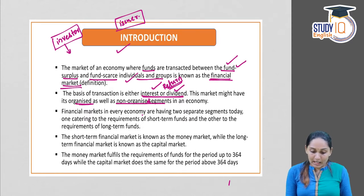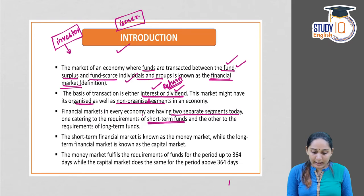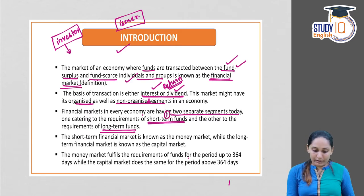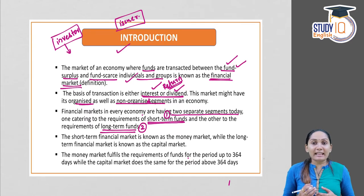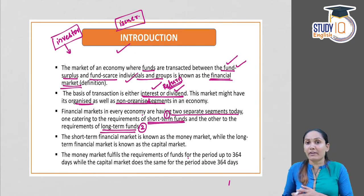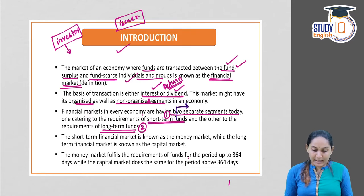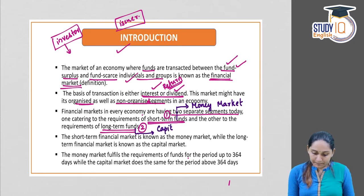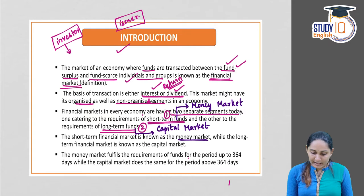Financial markets in every economy have two separate segments. One is to cater the needs of short-term funds and the other is to cater the needs of long-term funds. The segment of financial market that deals with short-term funds is known as the money market, and the segment that deals with long-term funds is called the capital market.